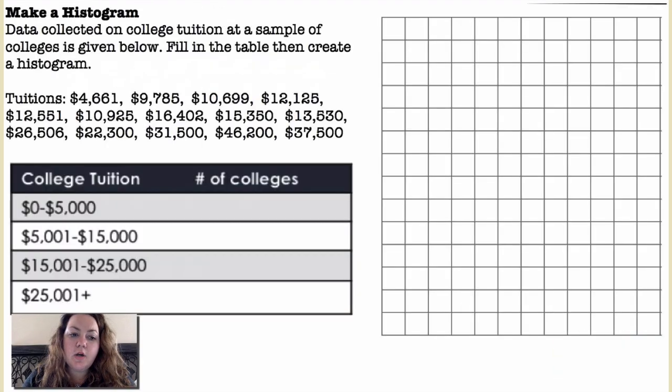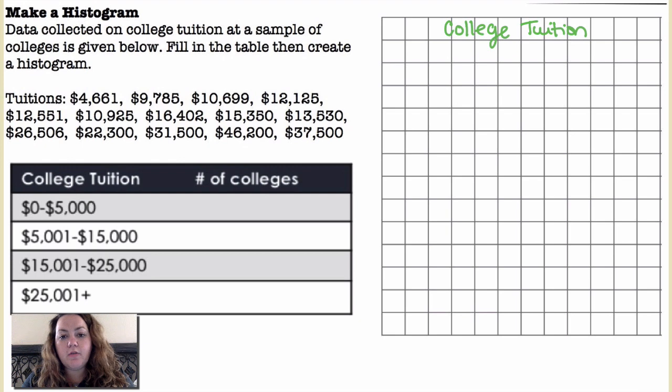Alright make a histogram. The data collected on college tuitions at a sample of colleges is given below. Fill in the table to create a histogram. So I'm gonna put a title here, college tuition, and then they gave me some sample values of different tuition costs and I want to break it apart from zero to five thousand, five thousand and one dollars to fifteen thousand dollars, fifteen thousand one dollar to twenty five thousand dollars and then anything above twenty five thousand. So I'm gonna do across the bottom I'm starting at zero then I'm gonna go to five thousand, fifteen thousand, twenty five thousand and I'm not gonna worry about anything more because it's just gonna be anything above that will be the next group.